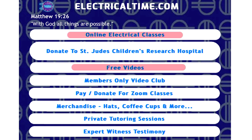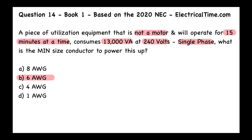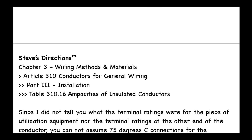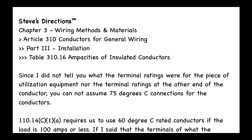A continuous load is one where the maximum ampacity will continue for three hours or more. Since this equipment only runs for 15 minutes, it does not meet that threshold, and we don't need to apply the continuous load multiplier.